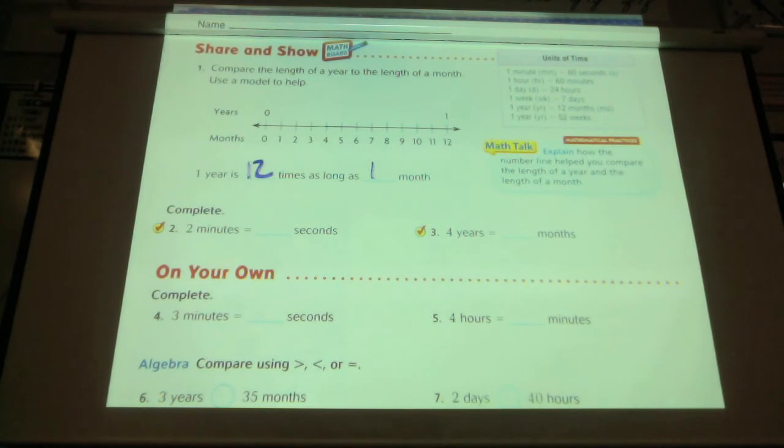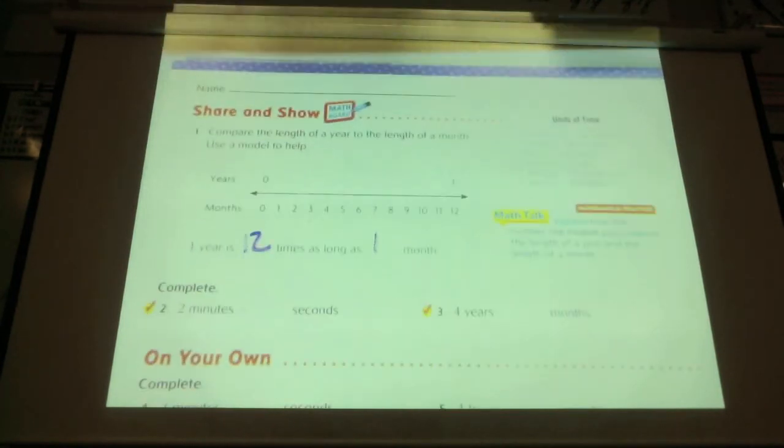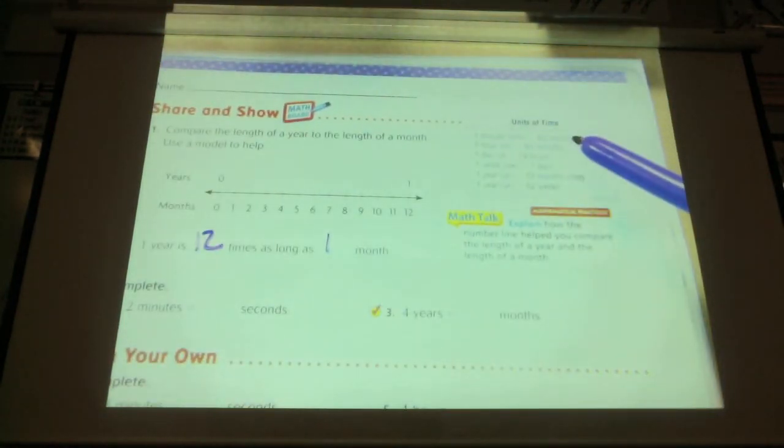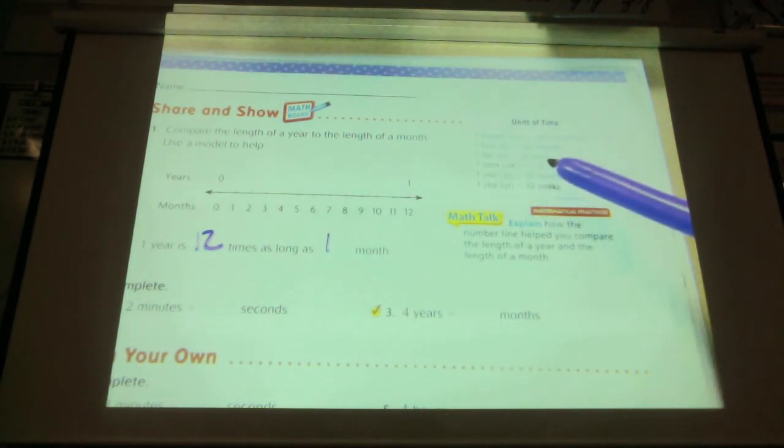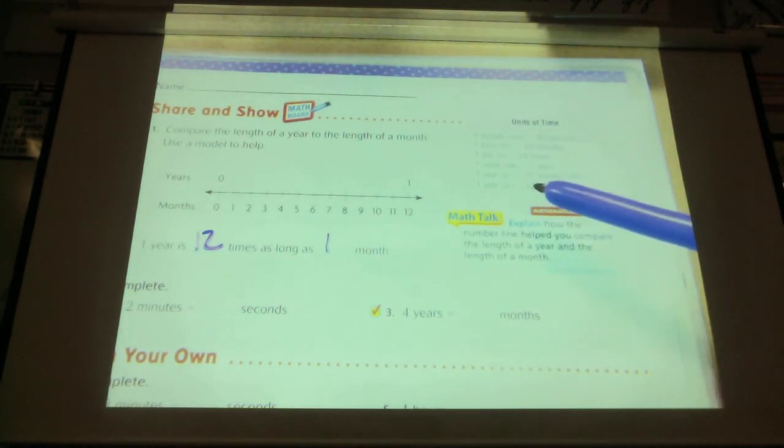The conversions are right up here if you forget. Sixty seconds in a minute. Sixty minutes in an hour. Twenty-four hours in one day. You guys know that? Seven days a week. Twelve months a year. Fifty-two weeks in a year.